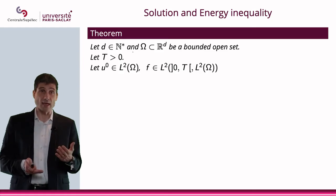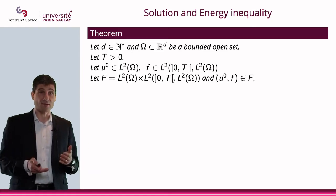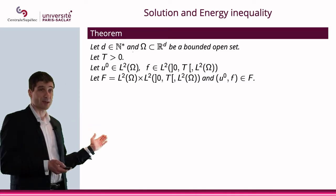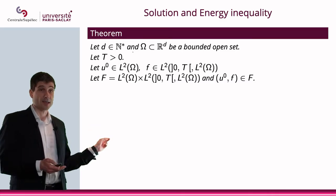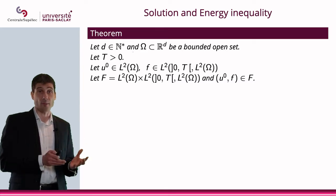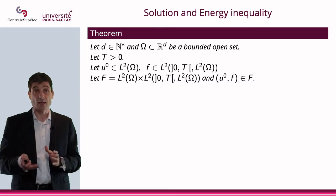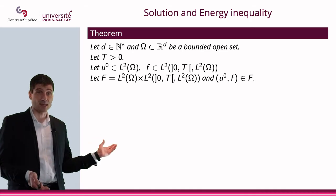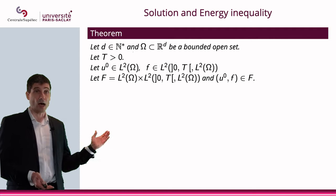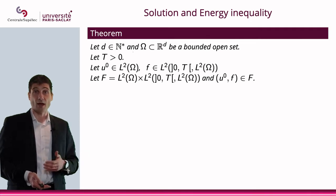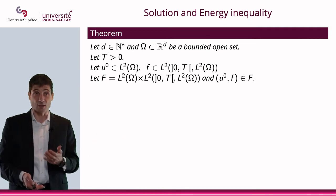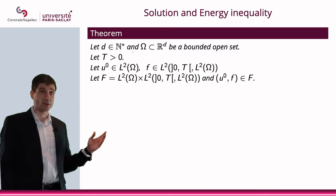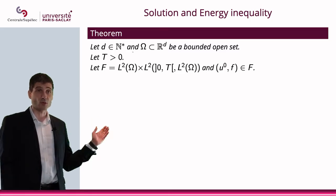I could actually write U₀ and F as an element of the space capital F, which is simply defined as L²(ω) times L²(0,T; L²(ω)). This makes sense because we defined in the previous video L²(0,T; X) where X is a Hilbert space, and L²(ω) is obviously a Hilbert space. So this is a little bit redundant.